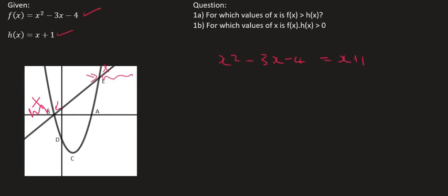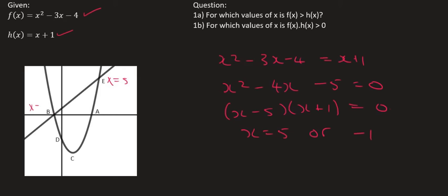So let's do that. So there I've made the two graphs equal to each other. Now, from this point, you just take everything to the one side. So that's going to become minus 4x minus 5. At this moment, you can factorize, or you could use the quadratic formula. I'm just going to factorize, and so you end up with 5 or minus 1. So those are the two x values. So that means that at e, its x value would be equal to 5, and then at b, the x value there is negative 1.